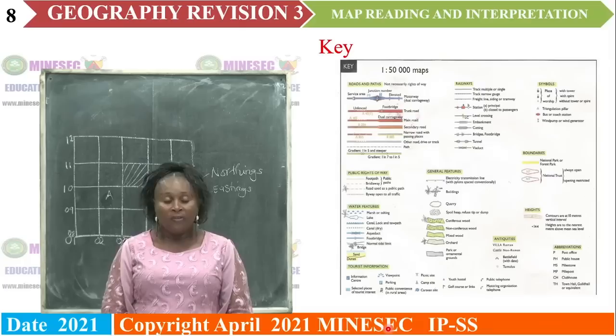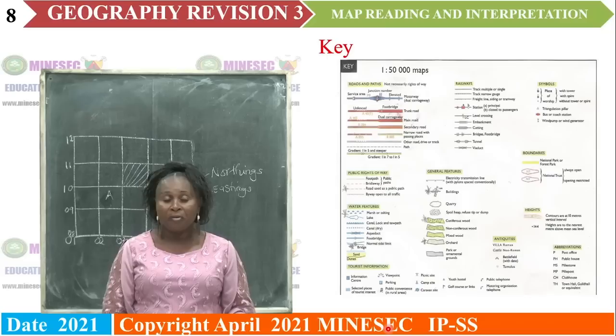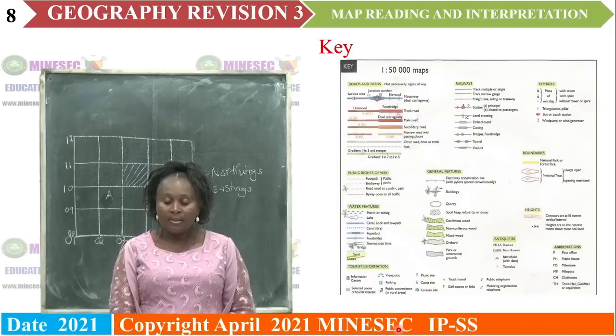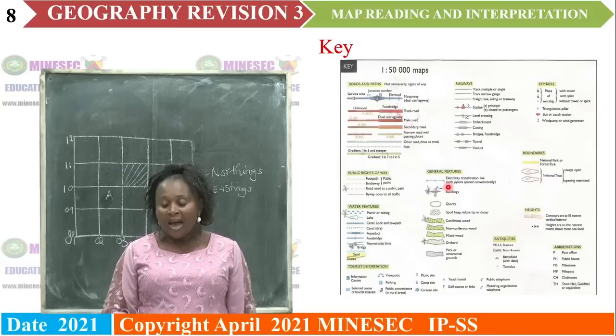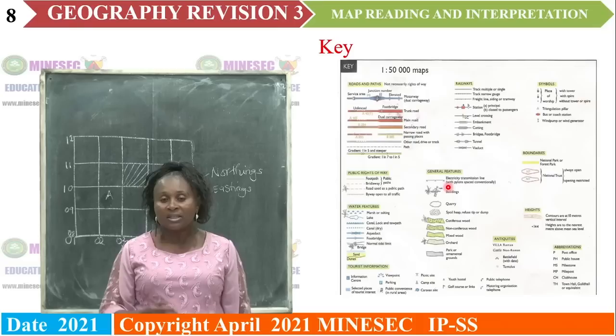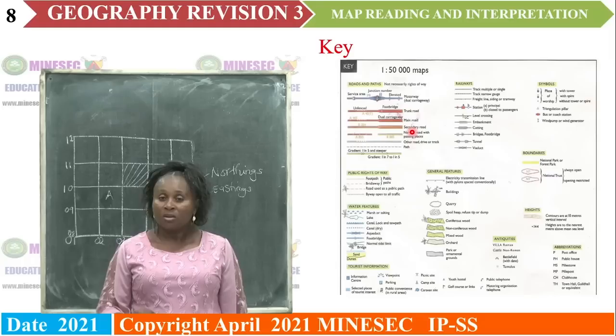The next element of a topographic map is the key. Remember, if you lock your door and throw the key, there's no way you can get into that house. So the key is the most important element of a topographic map. It is this key that we use to analyze the symbols, the signs, or to interpret the signs and symbols that we have on the topographic map. These signs and the key are conventional — once you see a sign anywhere, it means the same thing.